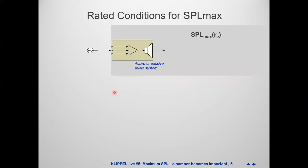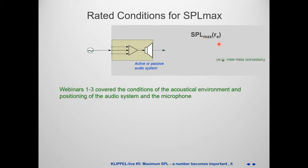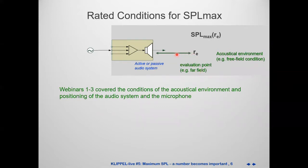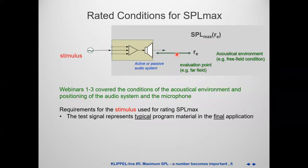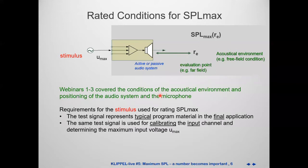The rated conditions include, of course, the maximum SPL level at the evaluation point, all the acoustical environment aspects covered in the first webinars — generating simulated free field and far field conditions. Now we are speaking about the stimulus. The stimulus for the calibration should be close to the typical program material and meaningful for the final application. It should be a short, deterministic signal — maybe not longer than one second — but very convenient to calibrate the whole input channel in a few seconds. The same signal is also used for 100-hour testing.